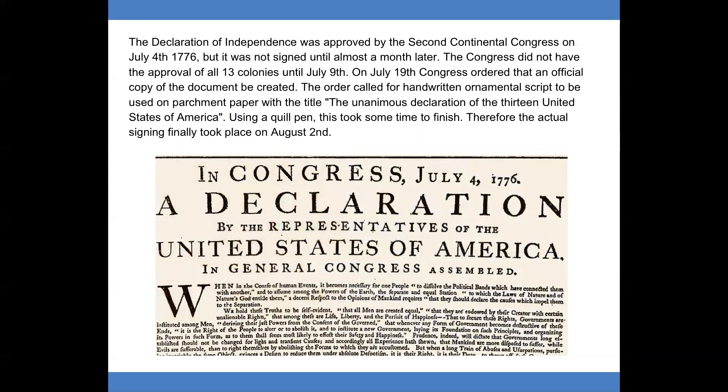Congress did not have the approval of all 13 colonies until July 9. On July 19, Congress ordered that an official copy of the document be created. The order called for handwritten ornamental script to be used on parchment paper with the title 'The Unanimous Declaration of the 13 United States of America.' Using a quill pen, this took some time to finish; therefore, the actual signing finally took place on August 2.